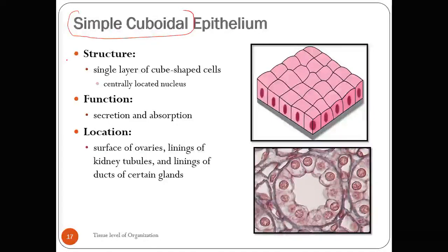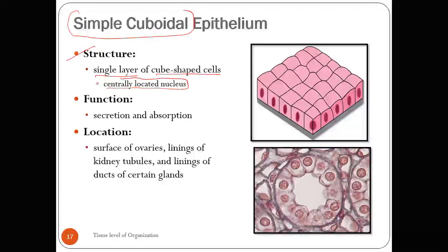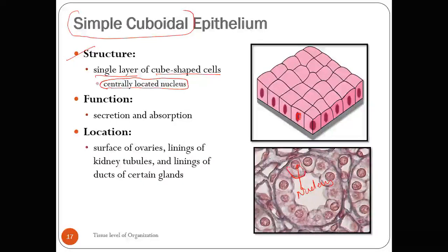The next type is simple cuboidal epithelium. From the name itself you can describe the structure: single layer of cube-shaped cells. Another important structural feature is the centrally located nucleus. In the histological section of simple cuboidal epithelium, the red-colored structures are the nuclei. You can see the cuboidal shape — though not an exact cube, the shape is approximately cuboidal in nature.